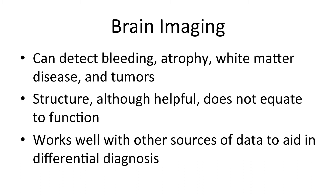The question sometimes arises: if you want to know how somebody's brain is functioning, why not just look at it? Brain imaging is great — it can detect bleeding, atrophy, white matter disease, and tumors. If something is protruding into the skull, you can see that. But structure does not necessarily equate to function. Brain imaging works well alongside other sources of information and can help differentiate the type of problem, but it does not replace a direct observation of how someone is actually performing.